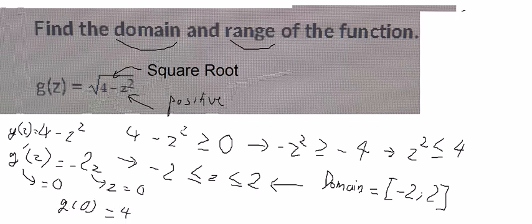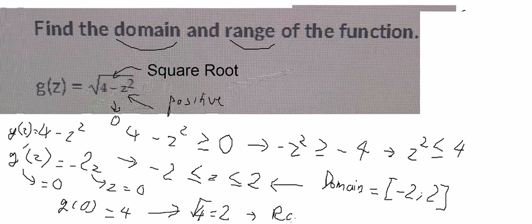Because we have the square root, you get the square root of 4, which equals 2. And we know that if z equals negative 2 or 2, the value goes to 0. So the range in this situation should be from 0 to 2. And that is the range of this function.